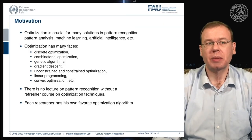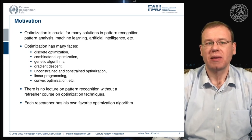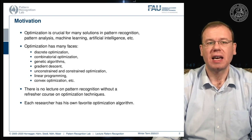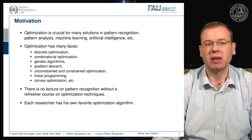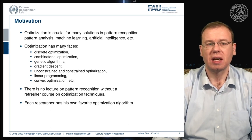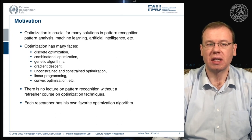Today's topic is optimization, which is crucial for many things in pattern recognition. You want to find solutions of complex objective functions, a problem that arises in pattern analysis, machine learning, artificial intelligence and the like. Optimization also has many facets: there's discrete optimization, combinatorial optimization, genetic algorithms, gradient descent, unconstrained and constrained optimization, linear programming, and convex optimization and so on.